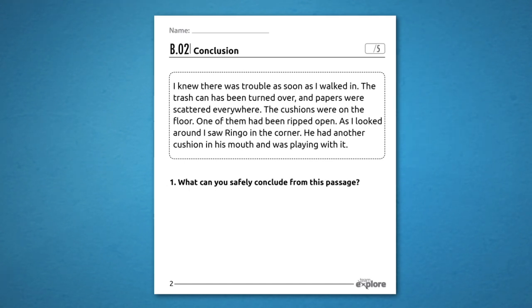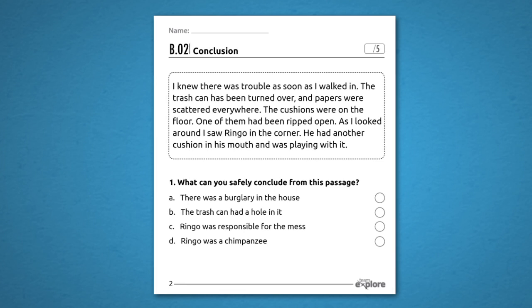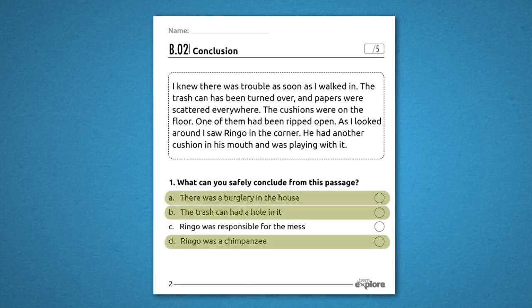What can you safely conclude from this passage? A. There was a burglary in the house. B. The trash can had a hole in it. C. Ringo is responsible for the mess. Or D. Ringo is a chimpanzee. If you think it's A, B or D, you're wrong. The correct answer is C. Ringo is responsible for the mess.